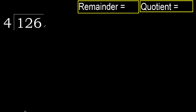126 divided by 4. 1 is less, therefore next. 12 is not less, therefore with 12. 4 multiplied by which number is nearest to 12, but not greater?